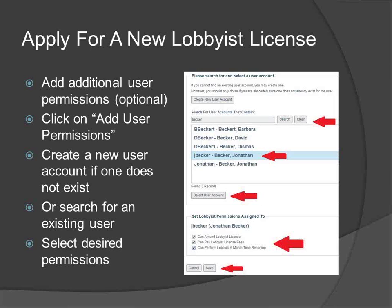If the person you wish to delegate permissions to does not already have a user account, click on Create New User Account. Complete all required information and click on Save. The new account you just created should be listed in the search field and be the only account in the list. Click on that account to highlight it and then click the Select User Account button. Next, select which permissions you wish to grant this person for your account. Finally, click Save. You can repeat this process as many times as necessary to add user permissions to your account.